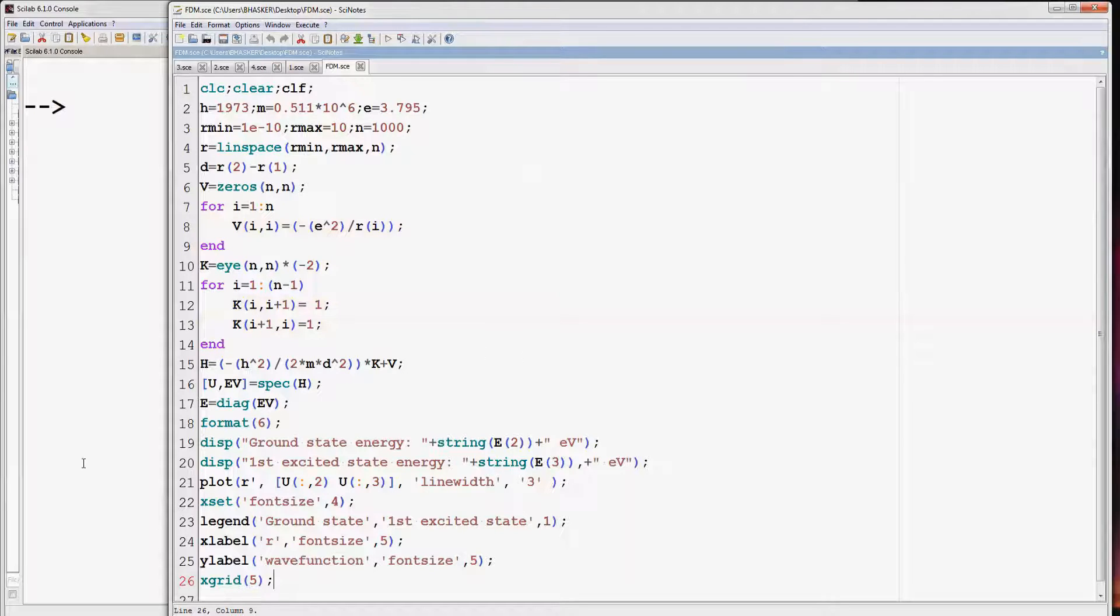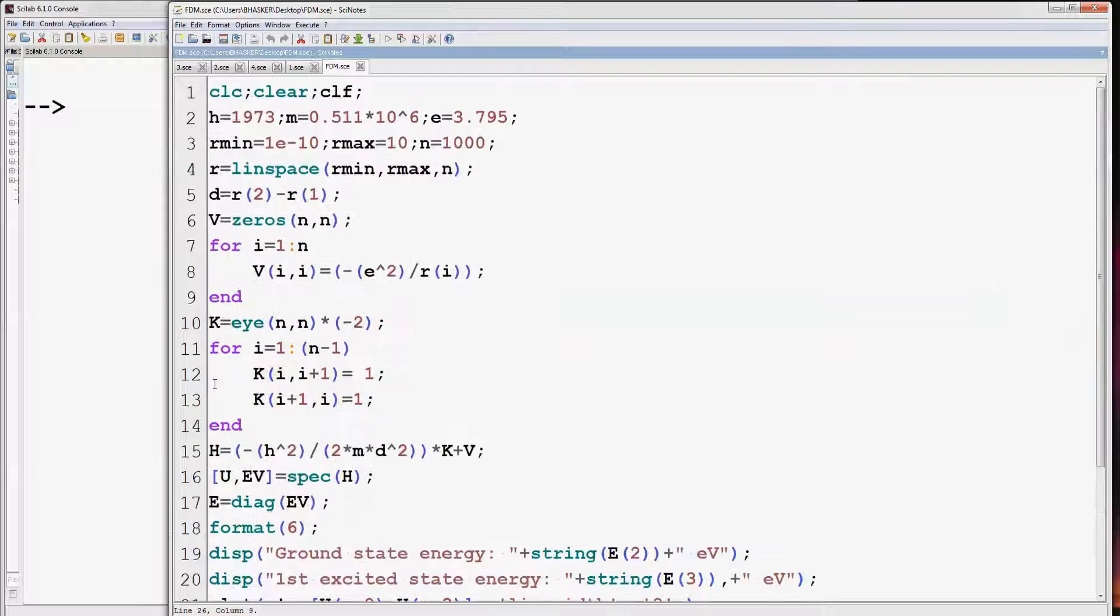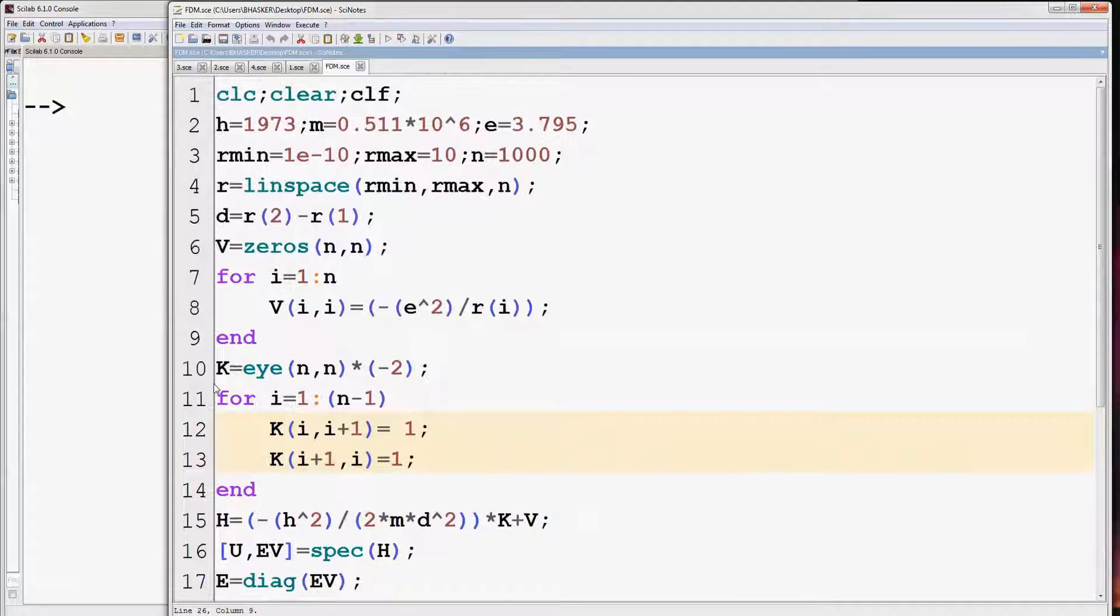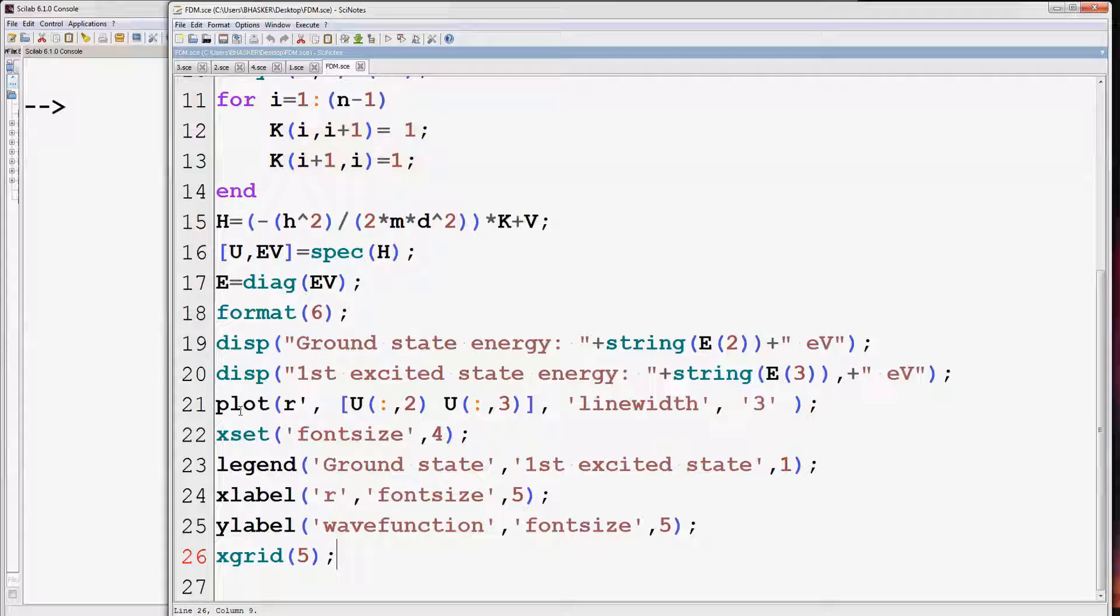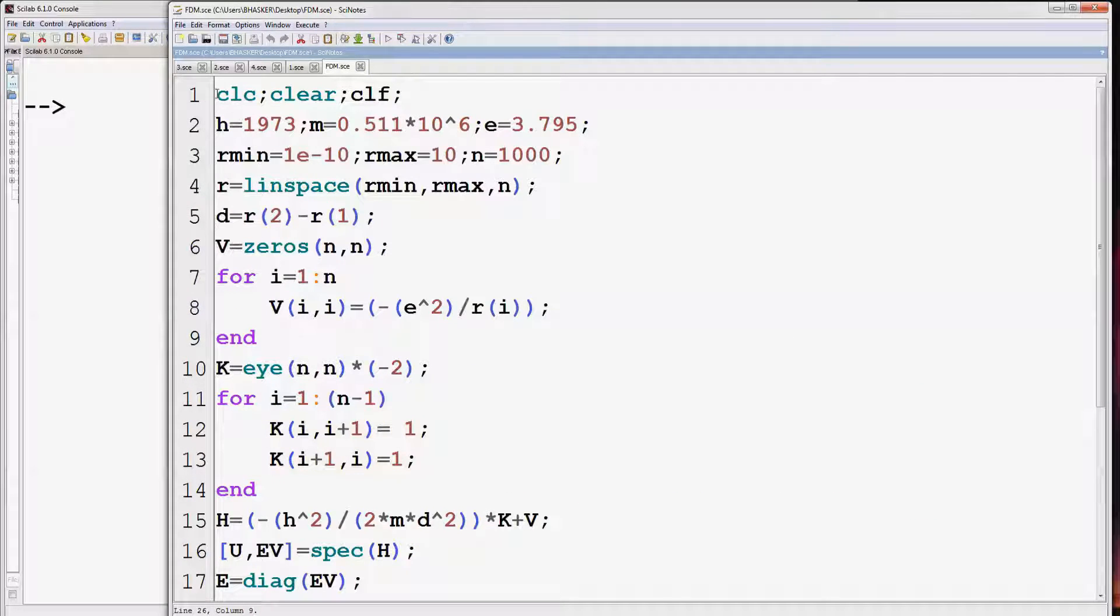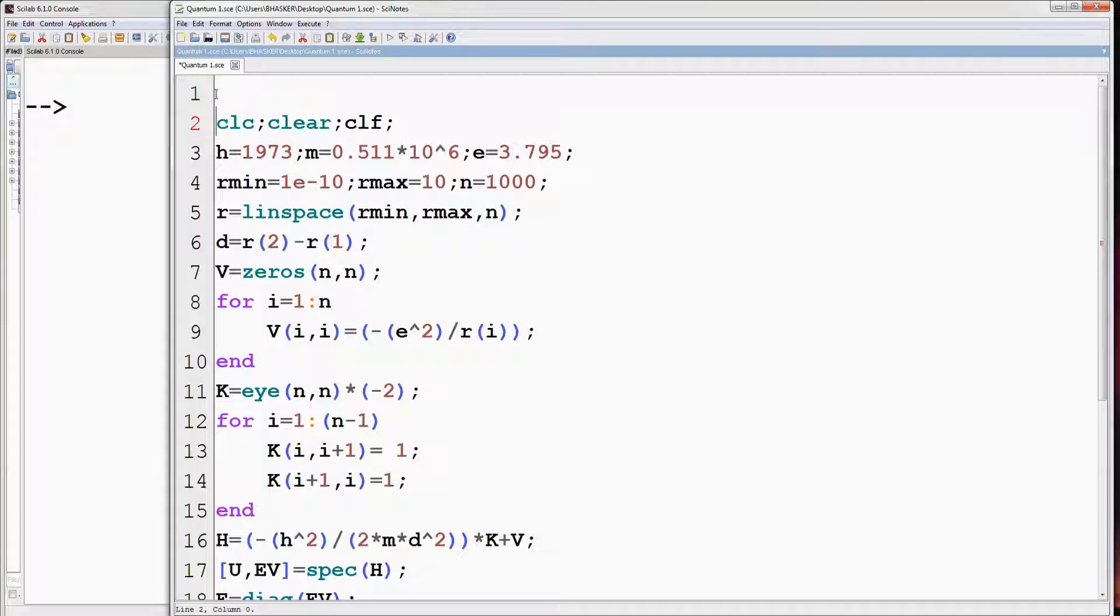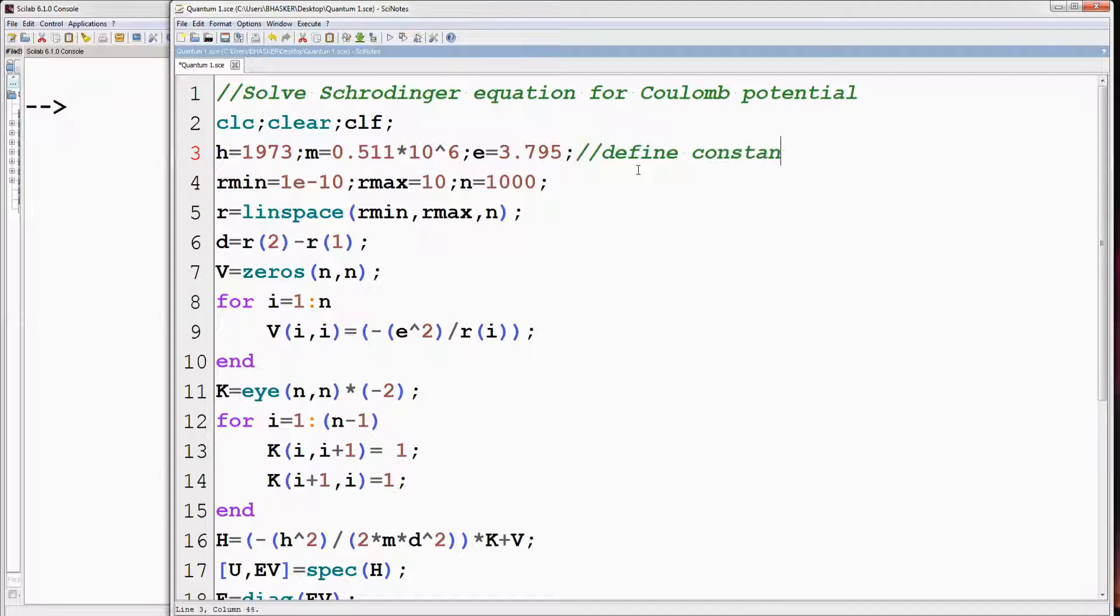Now this is the program that we have already discussed on solving Schrodinger equation for Coulomb potential. Before moving further, let's look at the program quickly and put comments for better understanding. Give the program a suitable title. First, constants are defined.